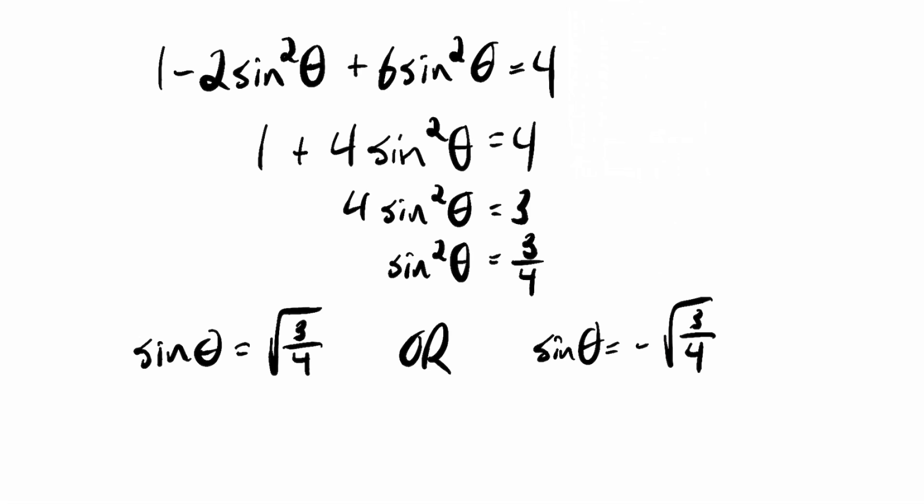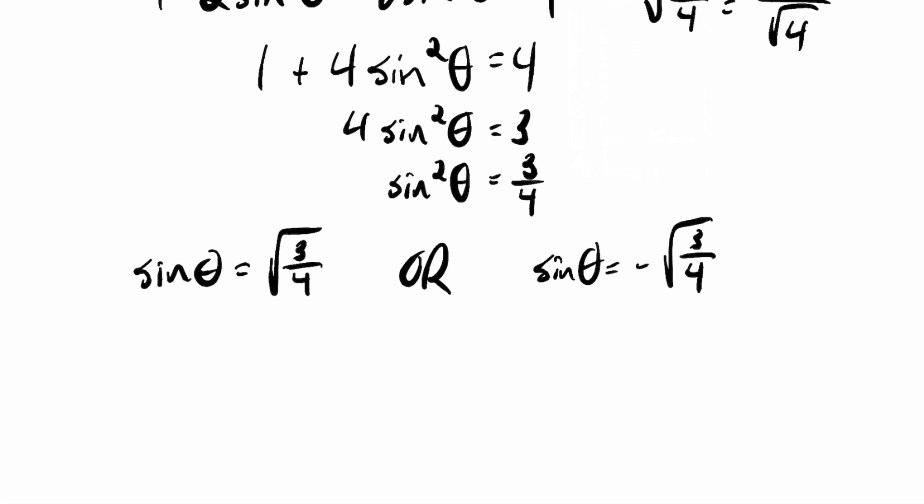Now, you might have noticed right away something that we can do to simplify this a little bit. When you have a square root of a fraction, you can apply the root to the numerator and denominator individually rather than just to the whole fraction. So I'll have root 3 over root 4. And of course, root 4 is just 2. So I can rewrite this as sine theta equals root 3 over 2, or sine theta equals negative root 3 over 2.